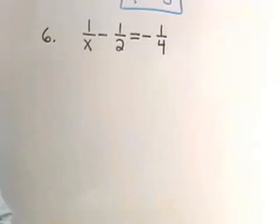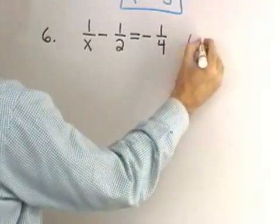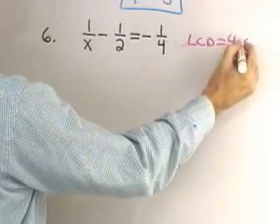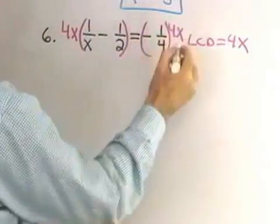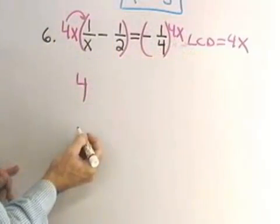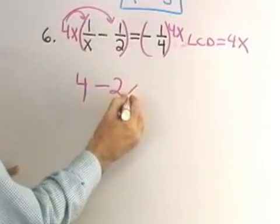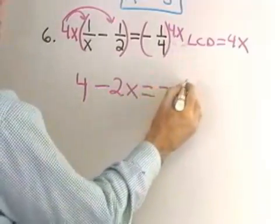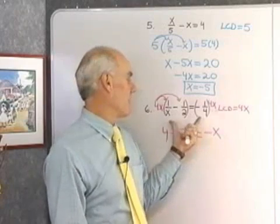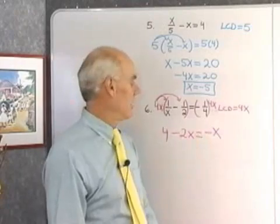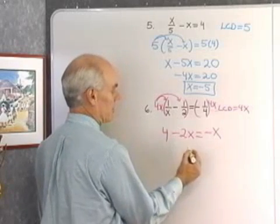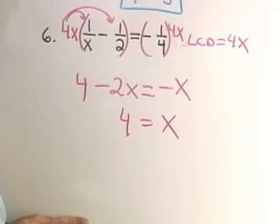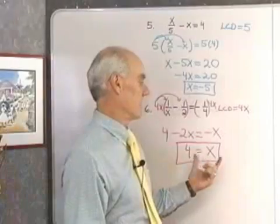Let's try one more LCD problem: 1/x minus 1/2 equals negative 1/4. The least common denominator is 4x. I multiply both sides by 4x. 4x times 1/x equals 4, the x's divide out. 4x times 1/2 equals 2x, the 2's divide out. Negative 1/4 times 4x equals negative x. So I get 4 minus 2x equals negative x. Getting variable terms on the right by adding 2x to both sides, the left side is 4 and the right is negative x plus 2x, which is x. So x equals 4.